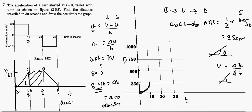Now for the second part — from 10 to 20 seconds — I'll find the area under this rectangle. The duration is 10 seconds and the height is 50 m/s, so the area of rectangle CDEB = 50 × 10 = 500 meters. So displacement during 10 to 20 seconds is 500 meters.